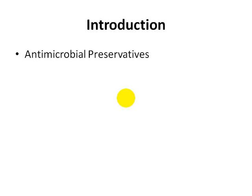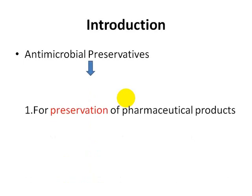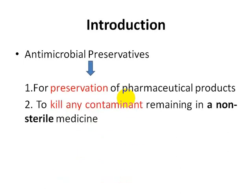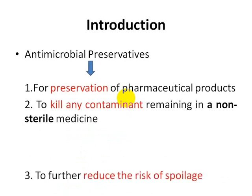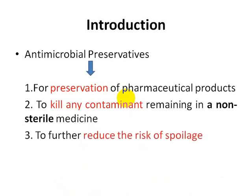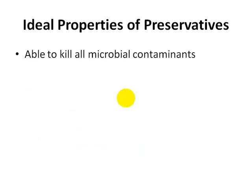Let's see what is the use of antimicrobial preservative agents. These are generally used for preservation of pharmaceutical products, to kill any contaminants remaining in non-sterile medicine, and to further reduce the risk of spoilage.